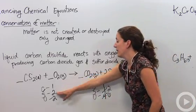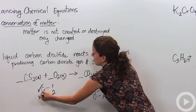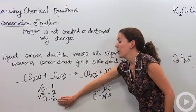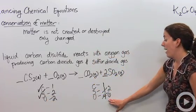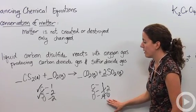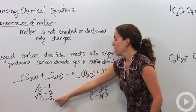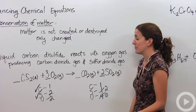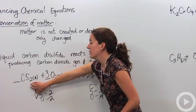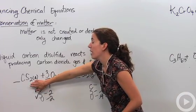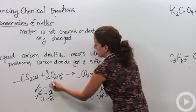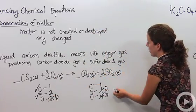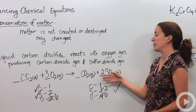Carbons are balanced — check. Sulfurs are balanced — check. We want to make sure our oxygens are also balanced. We have two on the reactant side and six on the product side, so we need to change that. We put a three in front of the oxygen gas, meaning we need three O₂ particles to react with one CS₂ particle. That gives us six oxygens on each side. The equation is completely balanced.